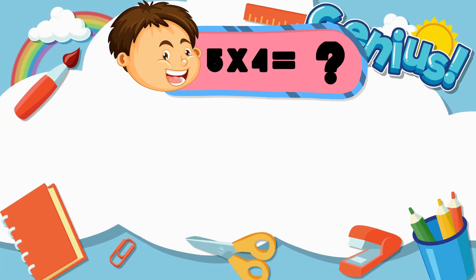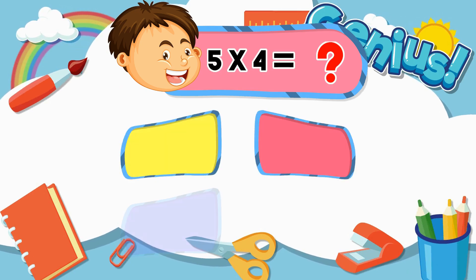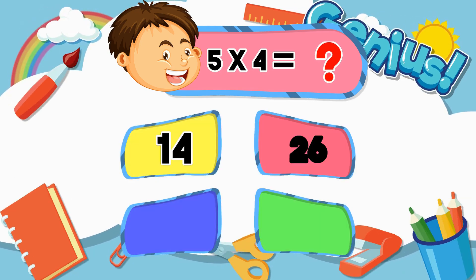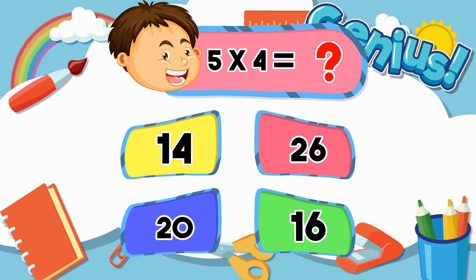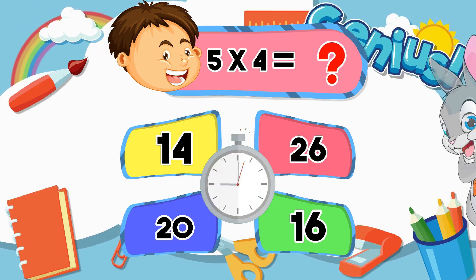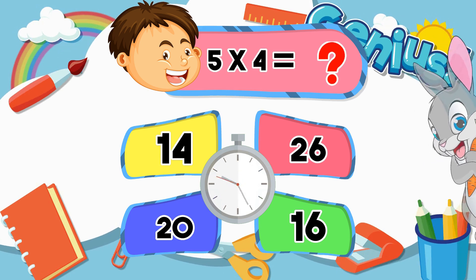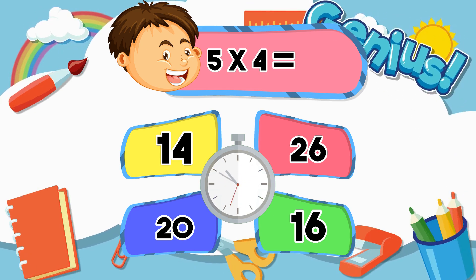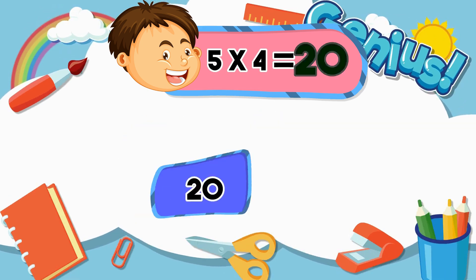What is 5 times 4? 14, 20, 20, 16. The answer is 20.